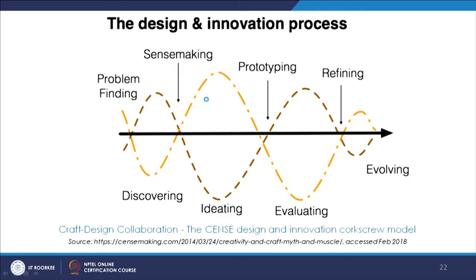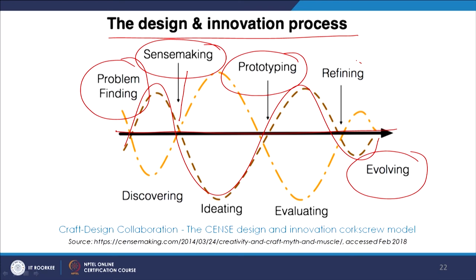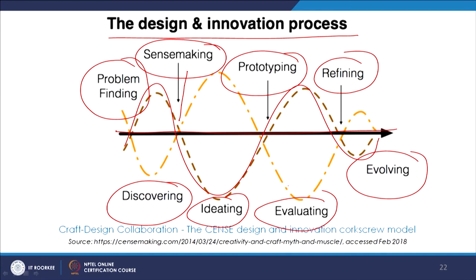There is another interesting diagram: the design and innovation process. Here while there is a linear path from problem finding to finally evolving, there is a constant graph with different parameters and activities coming into picture: sense making, prototyping, refining, discovering, ideating, evaluating. From here to this final evolving there is a graph that one takes, and there is this back and forth process that always happens.